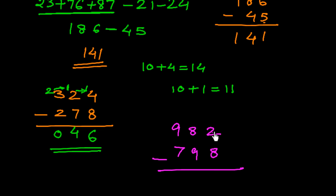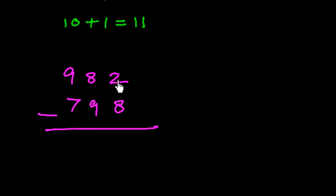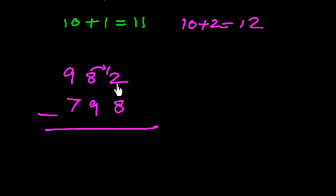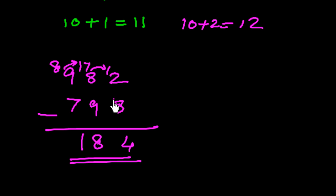In the next question, we subtract 798 from 982. In the unit place, 2 is smaller than 8, so we borrow 1 from the tens place: 10 plus 2 gives 12, and 12 minus 8 is 4. The tens place now has 7, which is smaller than 9, so we borrow again: 17 minus 9 is 8. The hundreds place is 8 minus 7, which is 1. So the answer is 184.